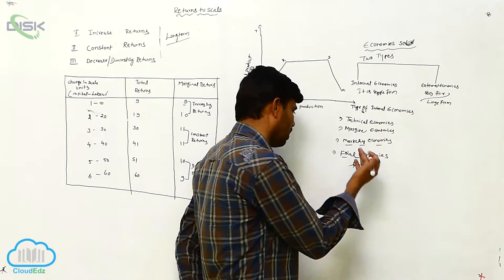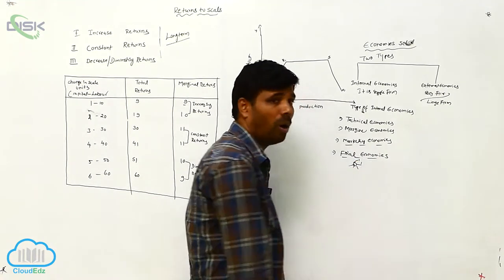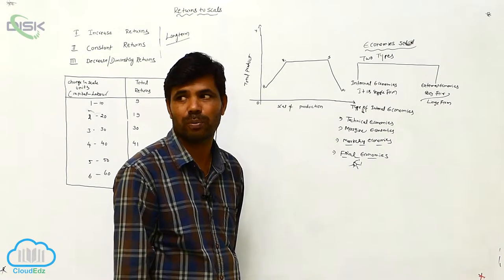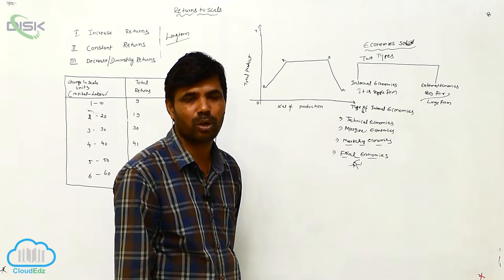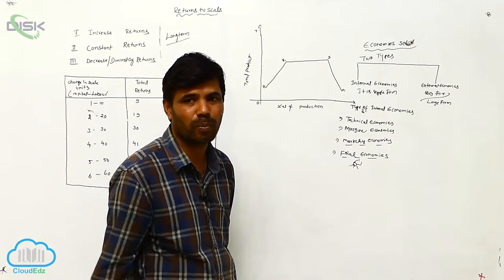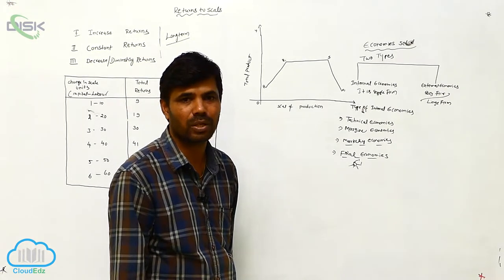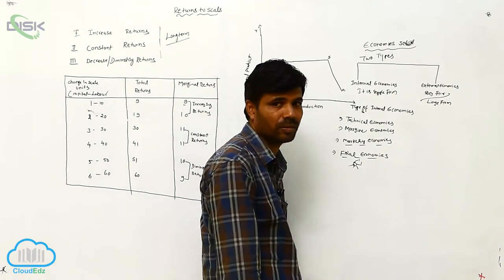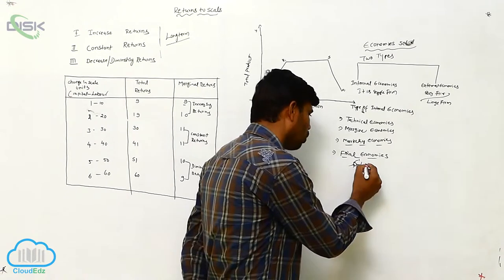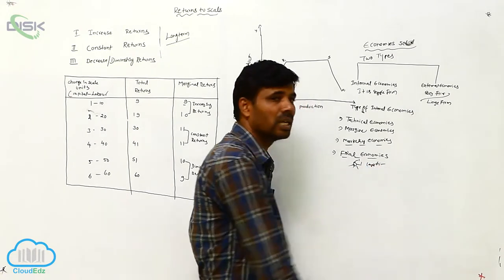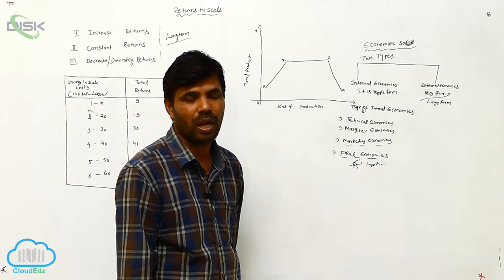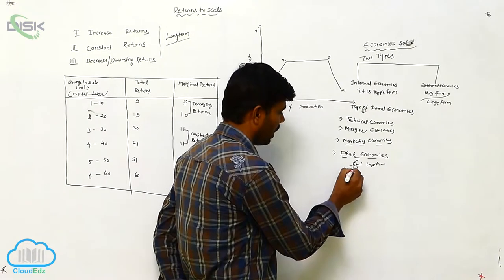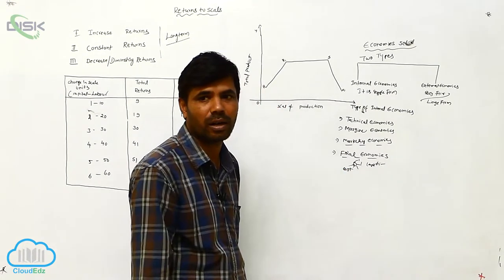We are paying salaries annually, quarterly, or monthly, whatever it is, in the financial department. Different departments are there, especially marketing department is there, advertisement department is there. Different departments, they are playing the main role in this financial economics.